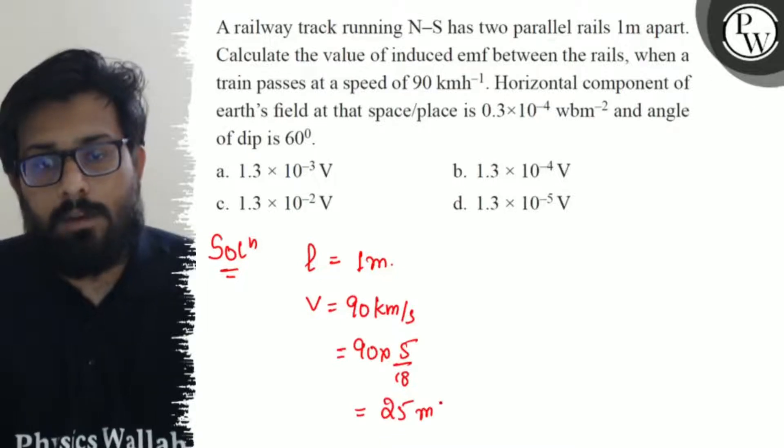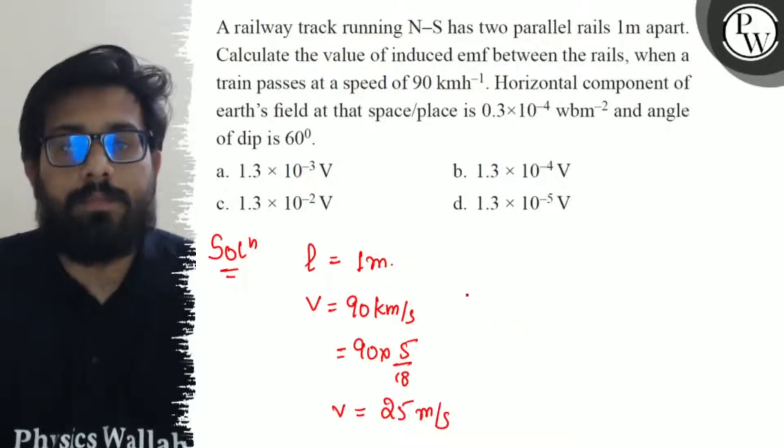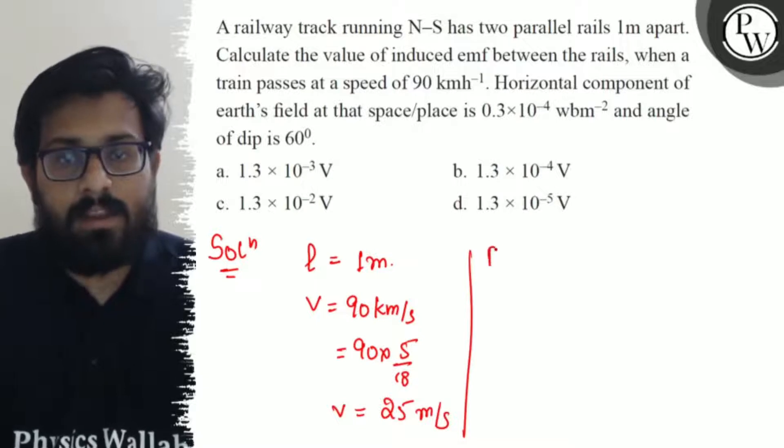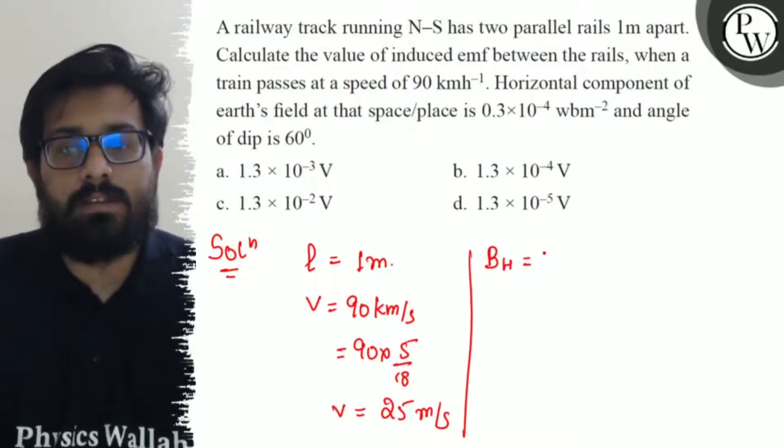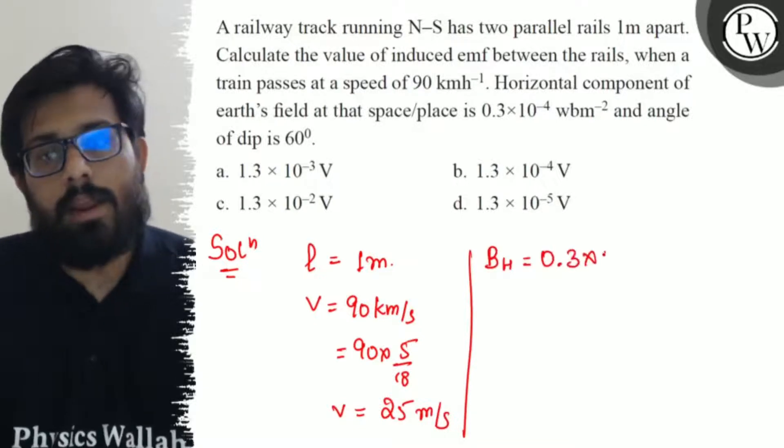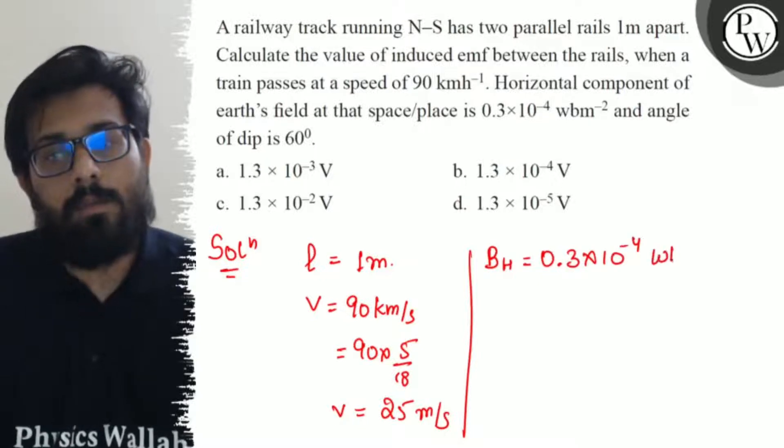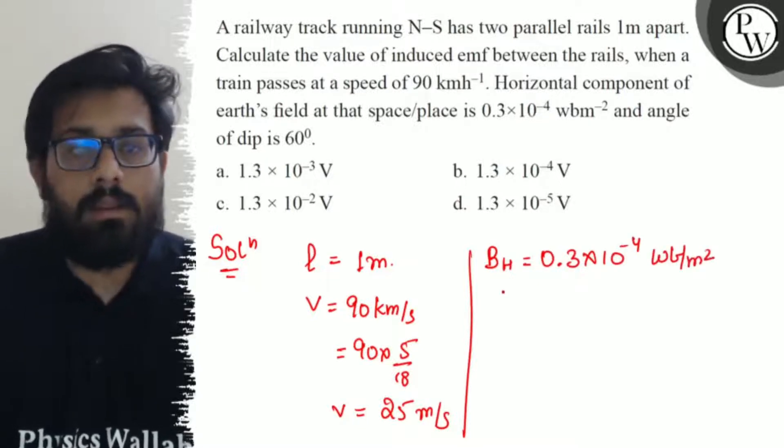The value of the magnetic field at that place is the horizontal component which is given as 0.3×10⁻⁴ weber per meter squared.